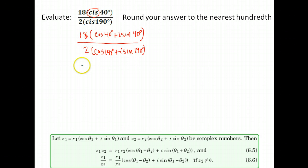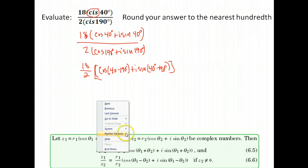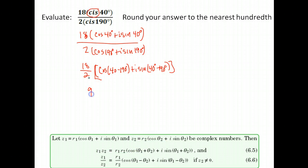We go ahead and divide in front, 18 divided by 2, and then here we subtract numerator minus denominator, so cosine of 40 minus 190 plus i sine 40 minus 190. 40 minus 190 gives me negative 150. And in front here, 18 divided by 2 is 9. So we have 9 times the cosine of negative 150 plus i sine negative 150.